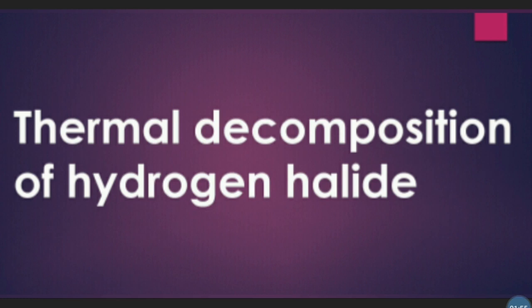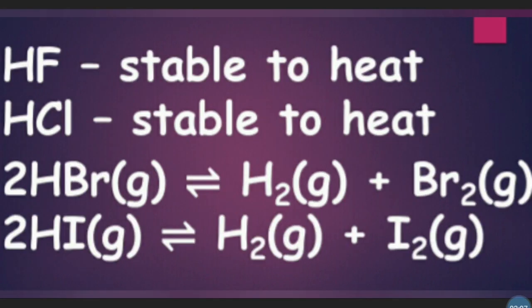We looked at the formation of hydrogen halides. Now, in this part, we are going to look at the decomposition of hydrogen halides back into hydrogen and halogen. Hydrogen fluoride and hydrogen chloride are very stable to heat — they don't split up into hydrogen and fluorine or chlorine again if heated to any normal lab temperature. Hydrogen bromide splits slightly into hydrogen and bromine on heating, and hydrogen iodide splits to an even greater extent.